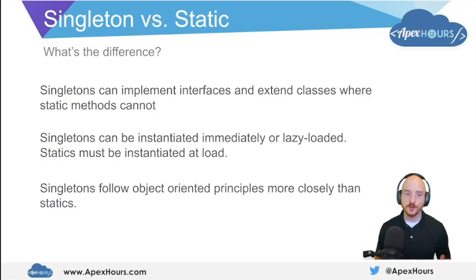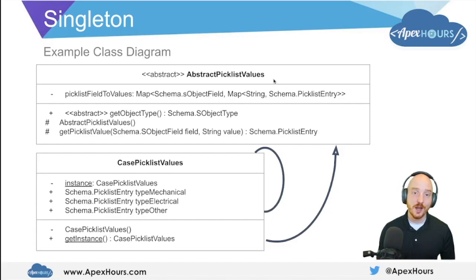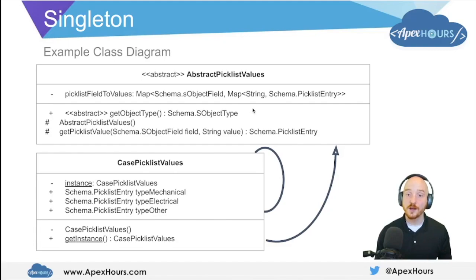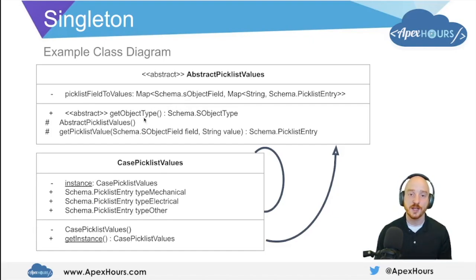Generally speaking, the singleton pattern follows object-oriented principles a little bit more closely than just using static methods and static variables. Now here we have an example of how we're going to use a singleton class. In this particular example we have an abstract parent class called AbstractPicklistValues. Because it's an abstract class, we cannot use it directly — we must rely upon a child class to extend it and define what 'getObjectType' means before this class can actually be useful.